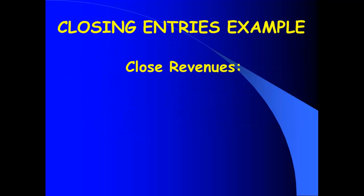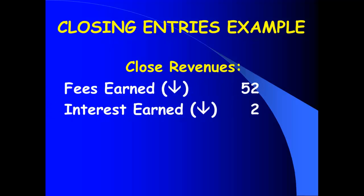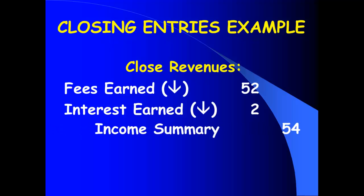Let's make a journal entry. First, to close out revenues — we had two revenue accounts. Revenues have a credit balance to begin with, so we close out revenues with a debit. We are going to debit fees earned and debit interest earned. Then make one credit for the total to Income Summary. Notice: two revenue accounts, debit each one individually, one credit for the total to Income Summary.